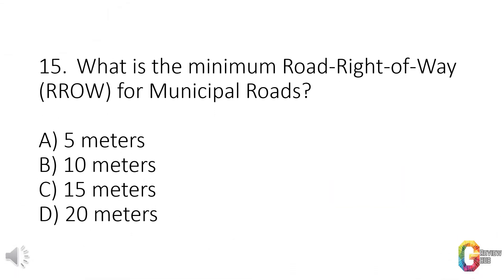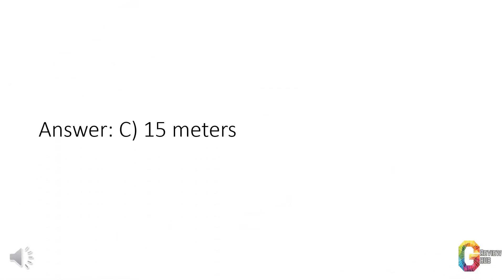Question 15. What is the minimum road right-of-way (RROW) for municipal roads? a. 5 m. b. 10 m. c. 15 m. d. 20 m. Answer: c. 15 m.